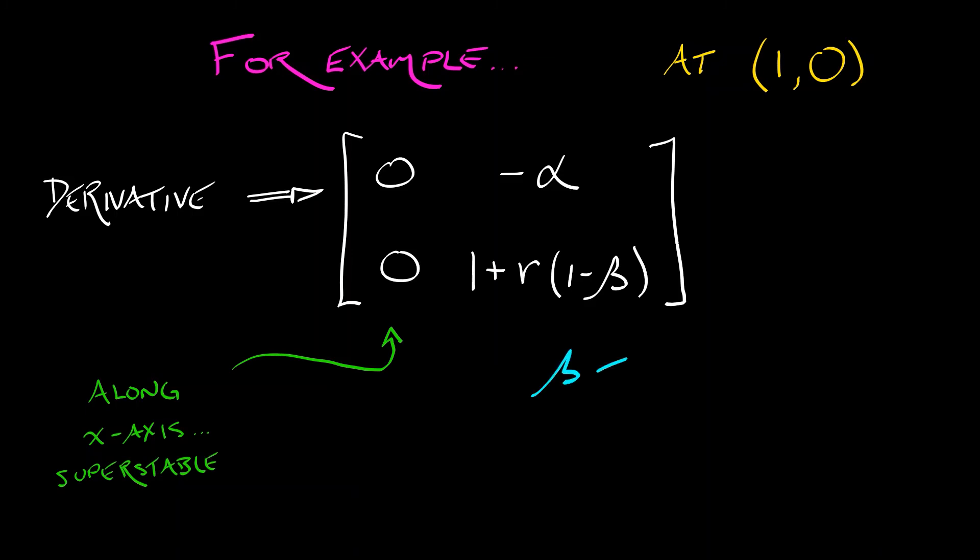Just like before, if beta is less than 1, then that second eigenvalue is definitely bigger than 1, and that means that we have a saddle point. But when beta is bigger than 1, then just like before, we get a sink.